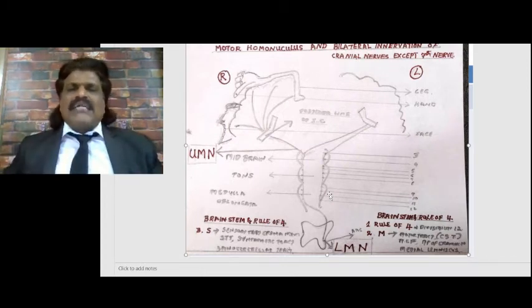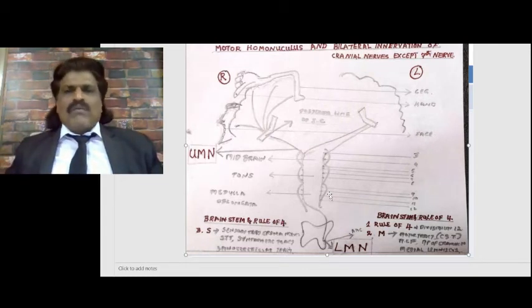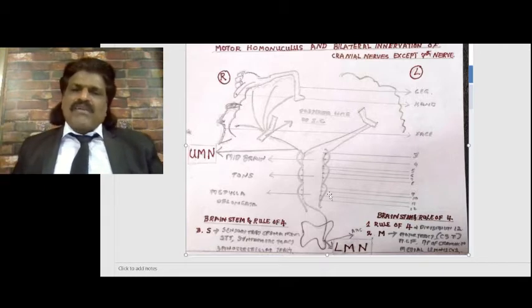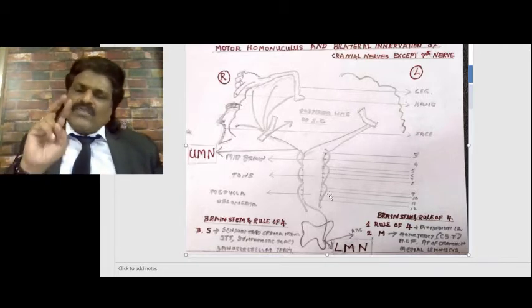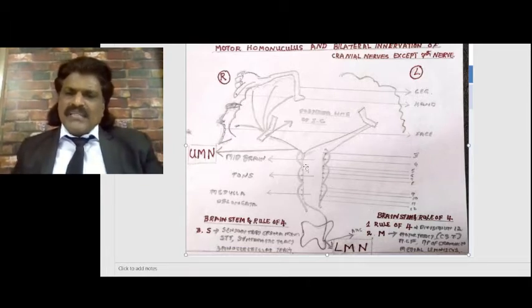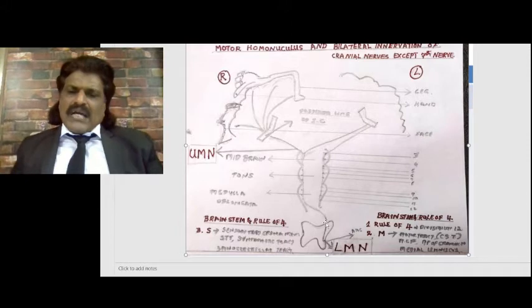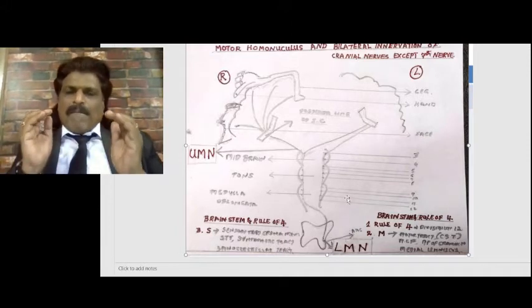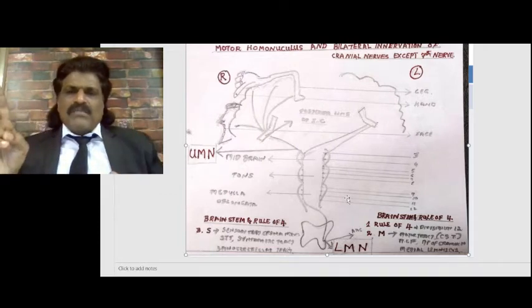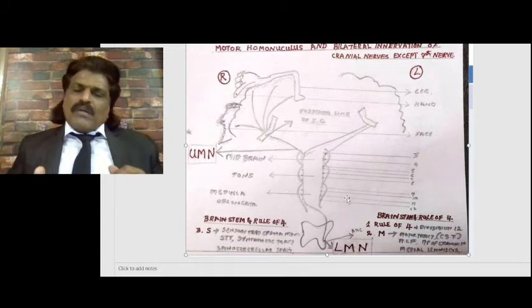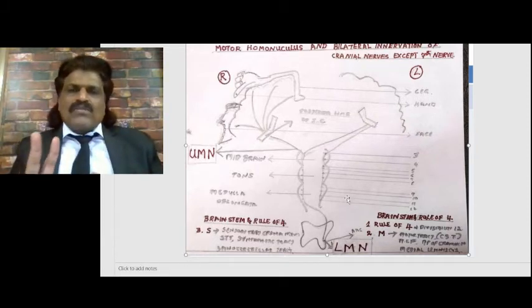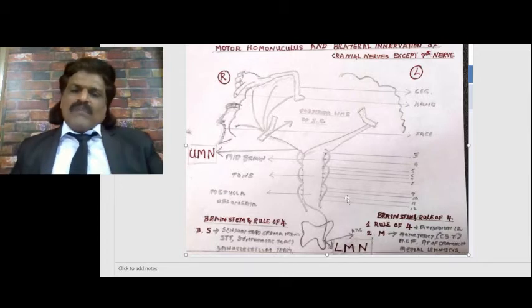Upper motor neuron has two components: corticobulbar fibers - from the Betz cells (fifth layer of motor cortex) going to the motor part of cranial nerve nuclei; and corticospinal fibers going to the anterior horn cells of the spinal cord. Lower motor neuron also has two components: what comes from the motor part of cranial nerve nuclei as cranial nerves, and what comes from the anterior horn cells as peripheral nerves. The pyramidal tract is purely a motor tract - it has nothing to do with sensory.